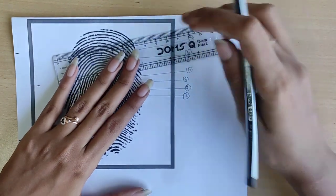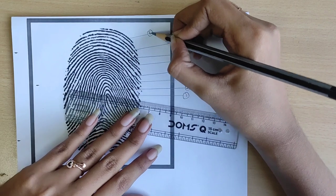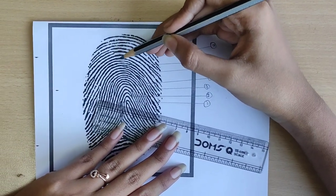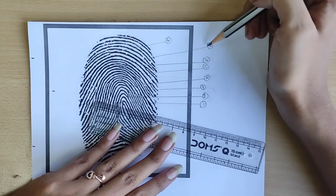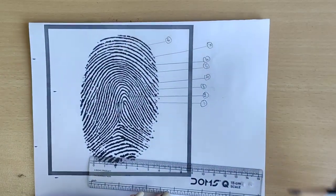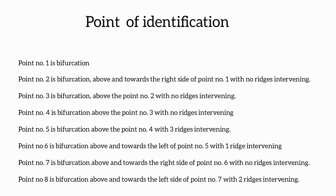Point number eight is bifurcation above and towards the left side of point number seven with two ridges intervening. For the admissibility in court, we could identify a minimum of eight ridge characteristics. So on comparing this questioned sample with the specimen sample, we got similar eight ridge characteristics — thus the fingerprint is matched.